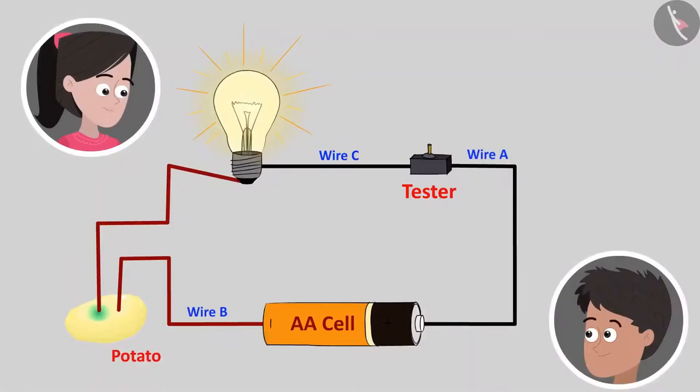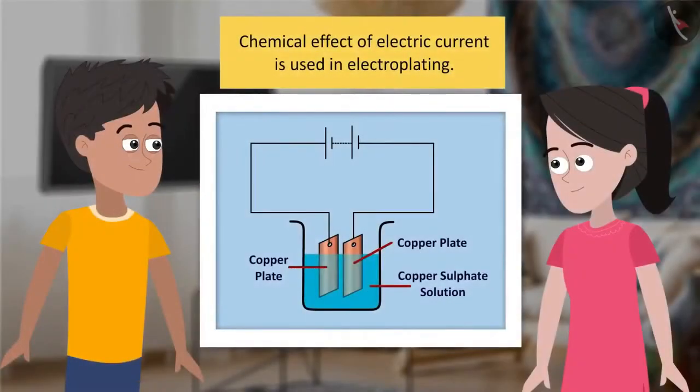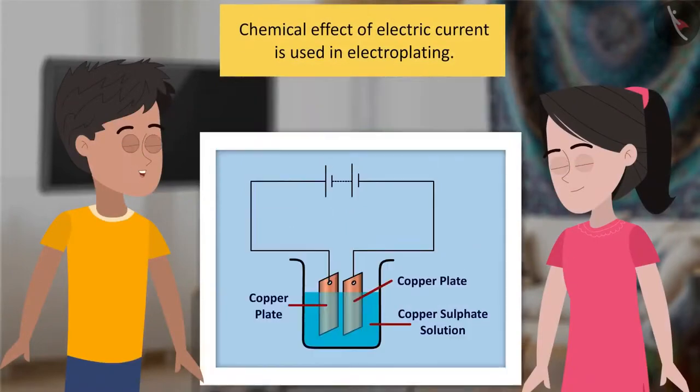Look, Bhaiya, there is a greenish-blue spot near one of the wires inserted into the potato piece. Yes, that is because the electric current produced a chemical effect in potato. Oh, wow! This is interesting. Yes, and what is even more interesting is that this property of current is widely used for electroplating materials.